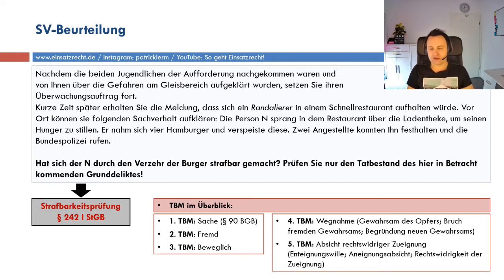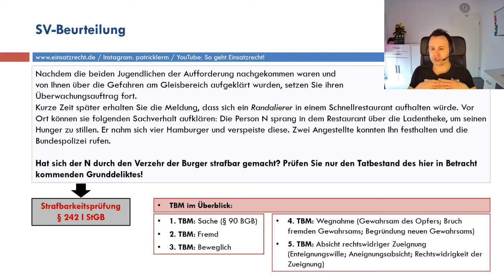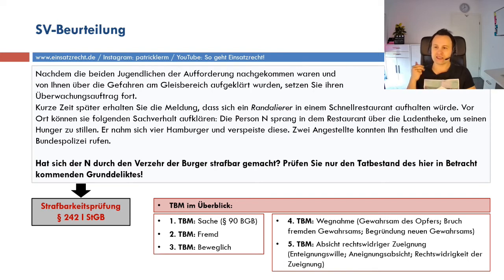Die Schwierigkeit beim Diebstahl ist genau diese innere Einstellung zu würdigen. Die Absicht der rechtswidrigen Zueignung besteht aus drei Elementen, ähnlich wie bei der Wegnahme: Erstens Enteignungswille, zweitens Aneignungsabsicht und drittens Rechtswidrigkeit der Zueignung. Auf meiner eLo-Page habe ich das entsprechend gewürdigt und viele Hinweise gegeben.